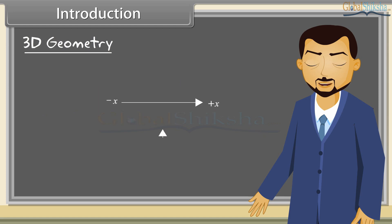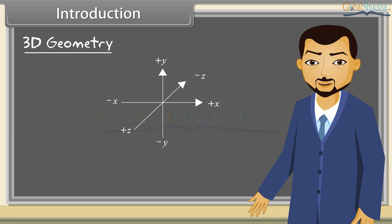Look at this figure carefully. The x-axis is along the length of the screen. The y-axis is along the height of the screen. And the z-axis will be the one coming out of the computer screen.